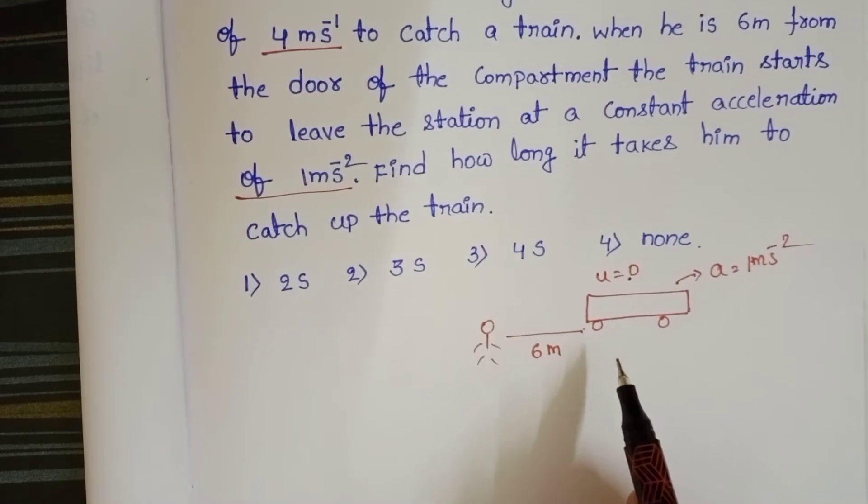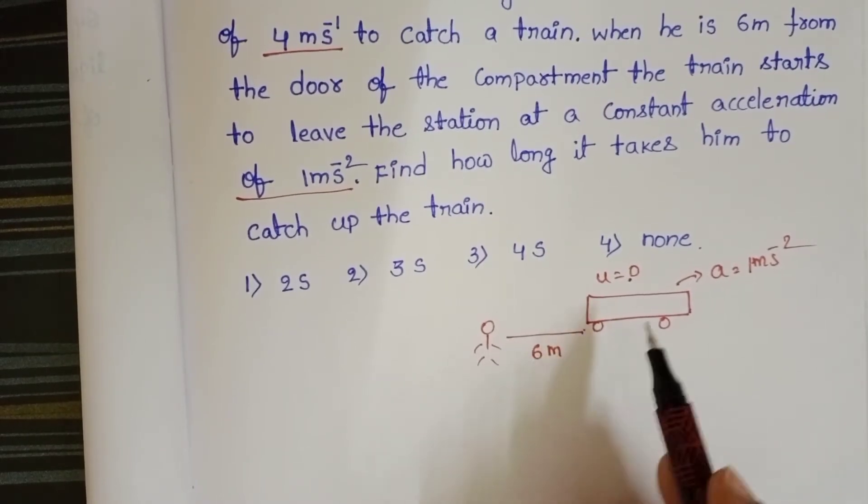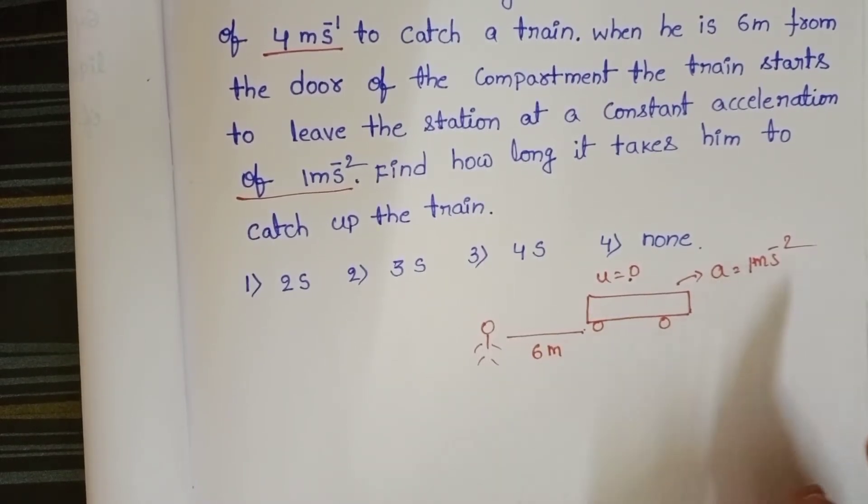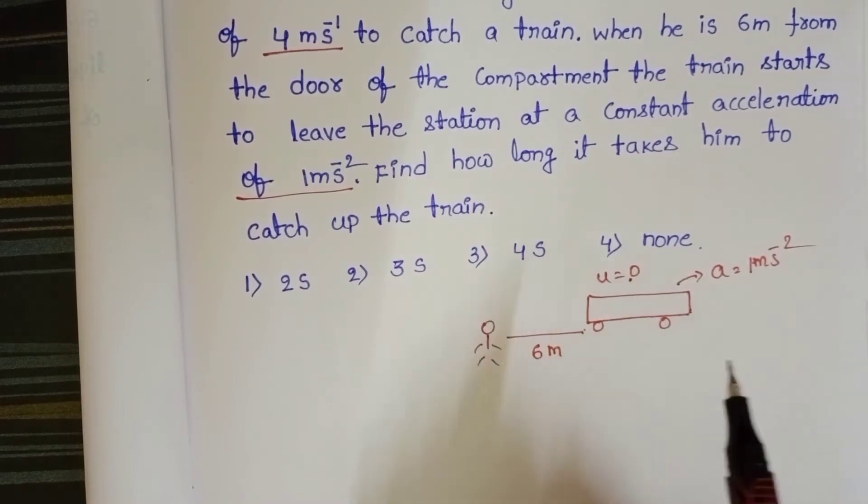Here, the person is in motion and at the same time, the train is also in motion in the same direction. So we have to use the relativity concept to solve this problem.